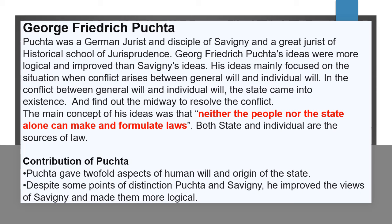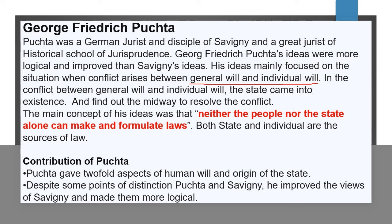Savigny के disciple और एक great jurist of historical school of jurisprudence — George Frederick Puchta — जिन्होंने general will और individual will के बीच जो conflict थी उसको सुझाने का प्रयास किया। ये कहते हैं: 'Neither the people nor the state alone can make and formulate laws; both state and individuals are the source of law।' Puchta ने two-fold aspect of human will और general will को develop करने का प्रयास किया और Savigny के concepts को improve करके logical sense में सामने रखा। This is the end of the Historical School of Jurisprudence।